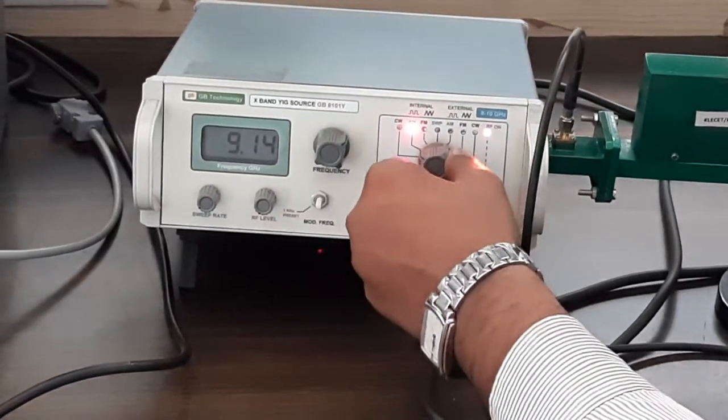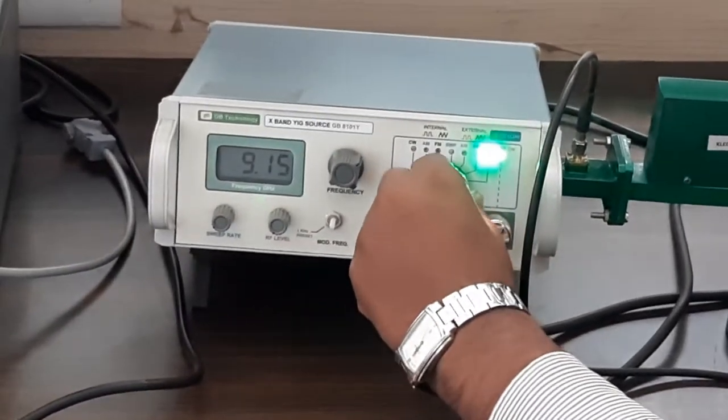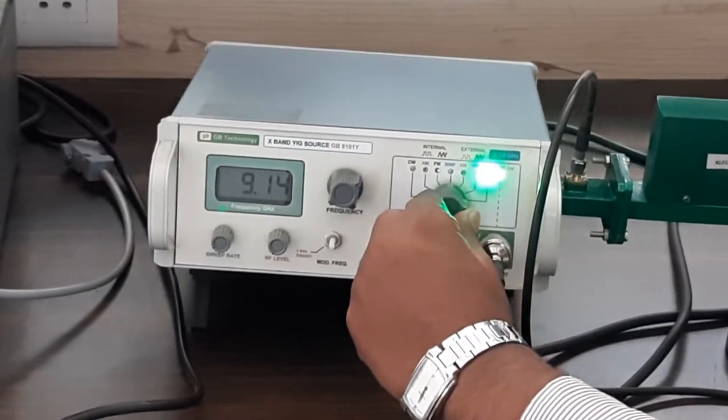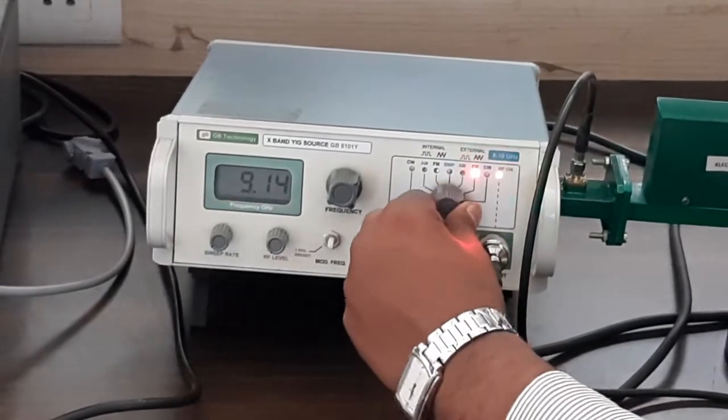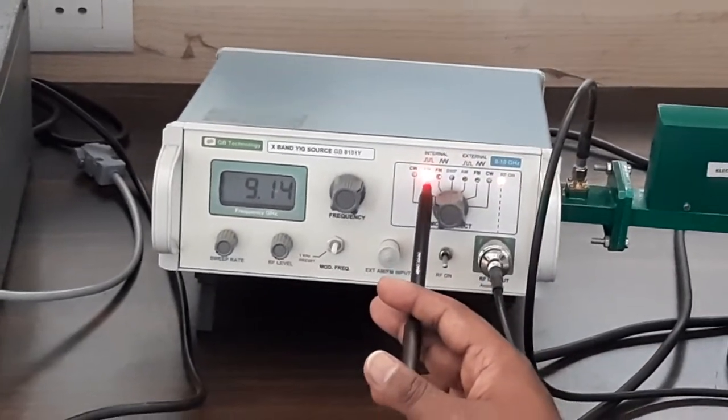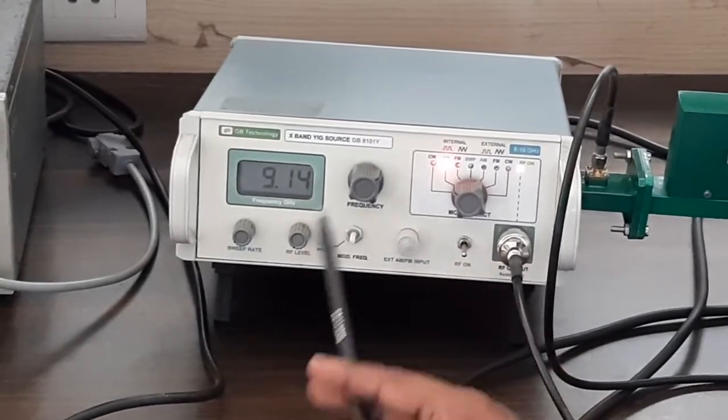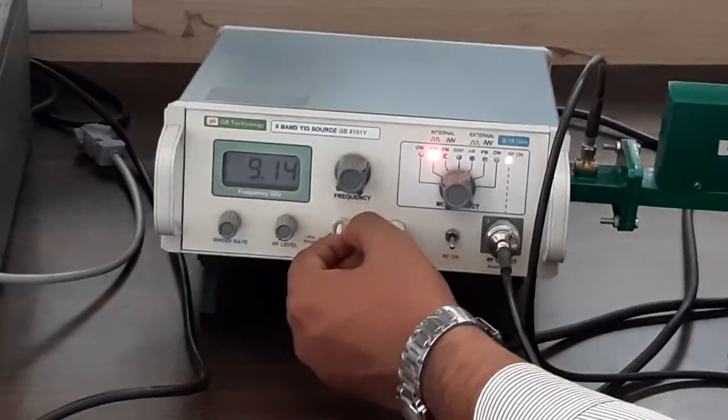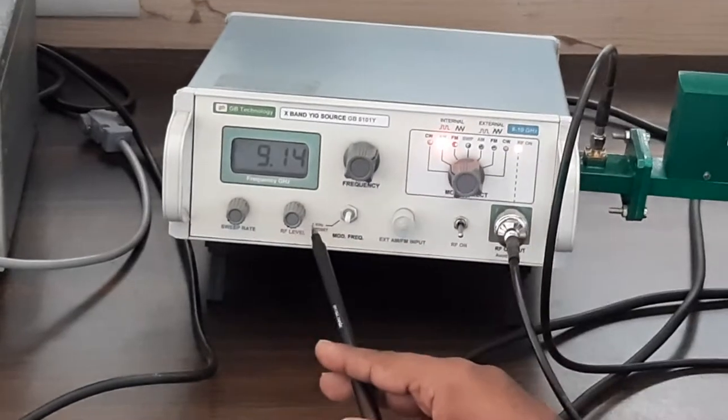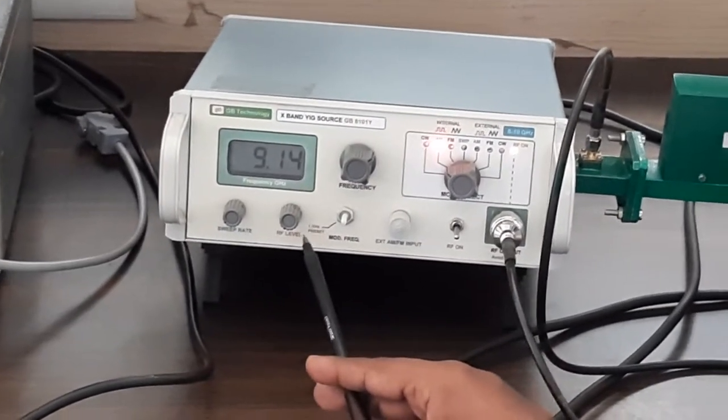It is using the internal modulation, and this one we are utilizing. This one will be enabled. In our case, it will be internal and we will be keeping it on amplitude modulation, AM. The modulation frequency is going to be internal. It is preset to one kilohertz.